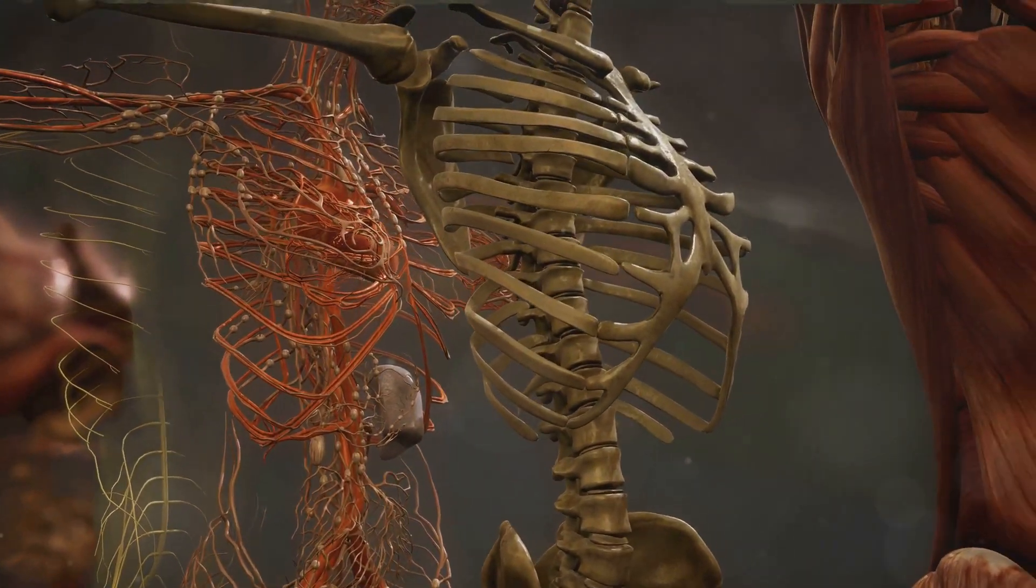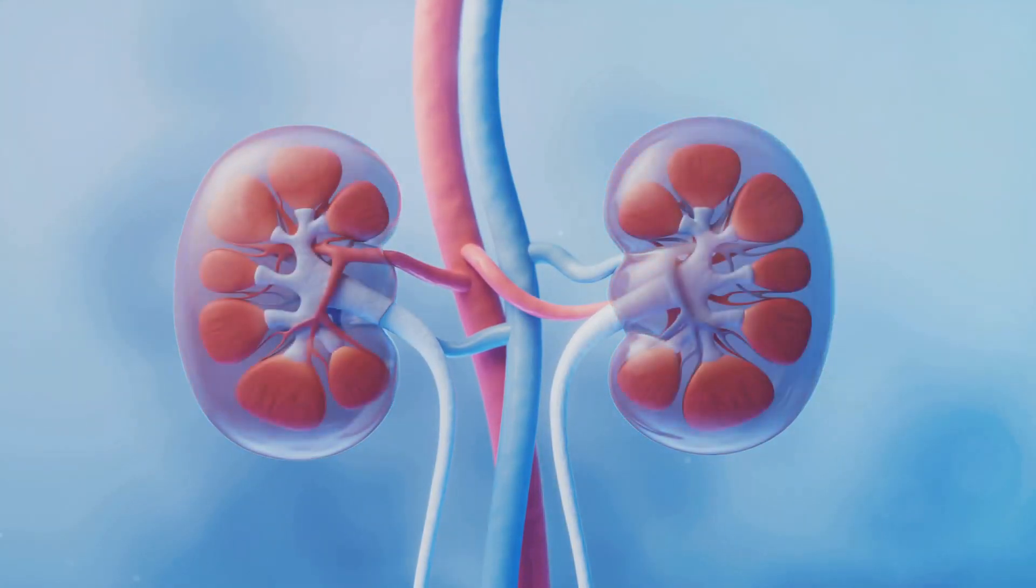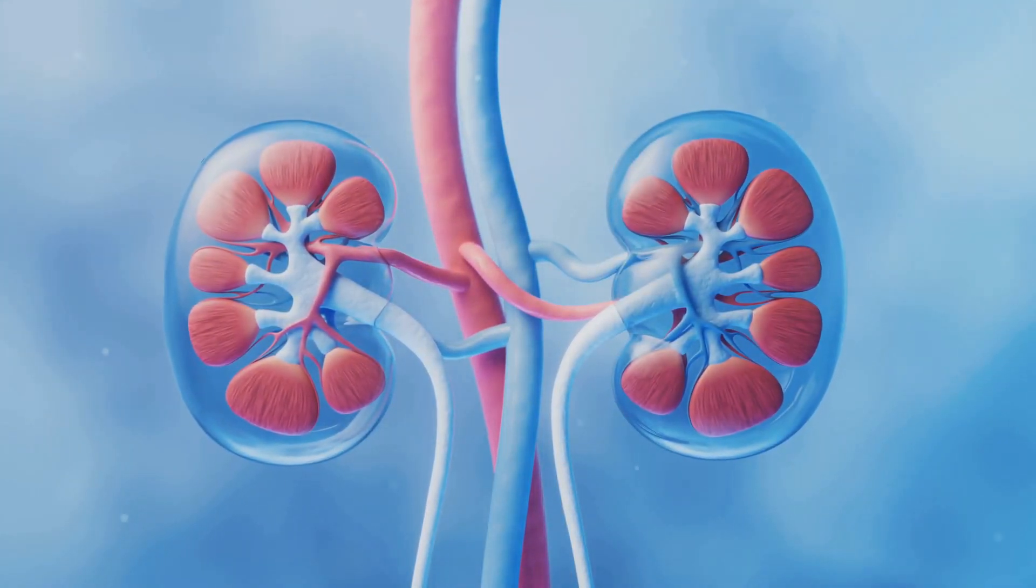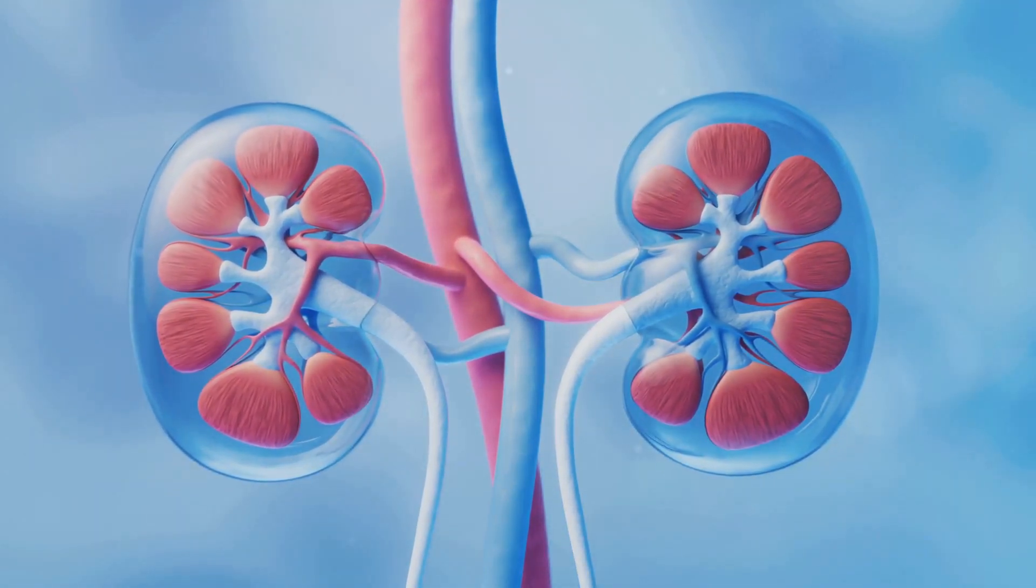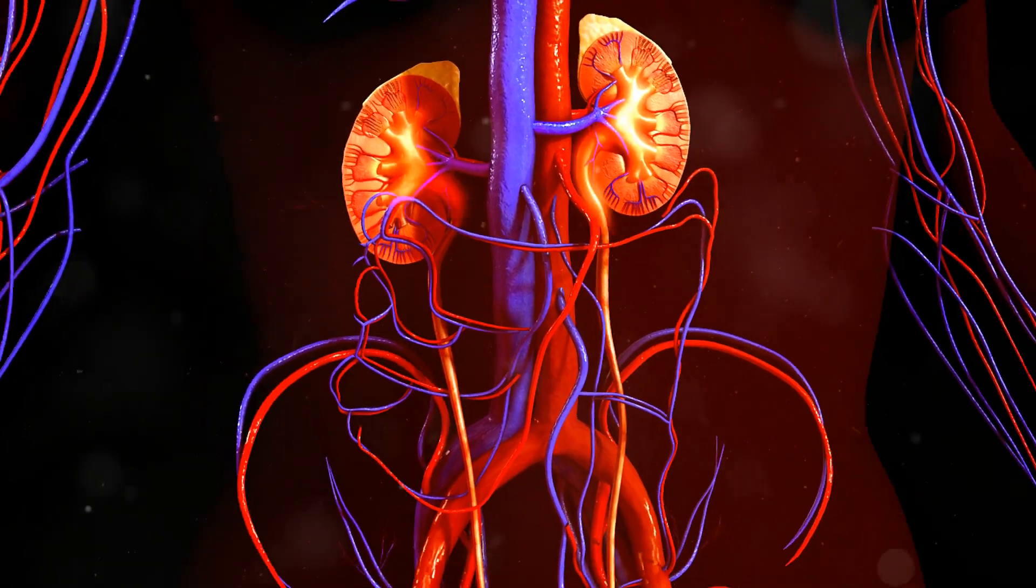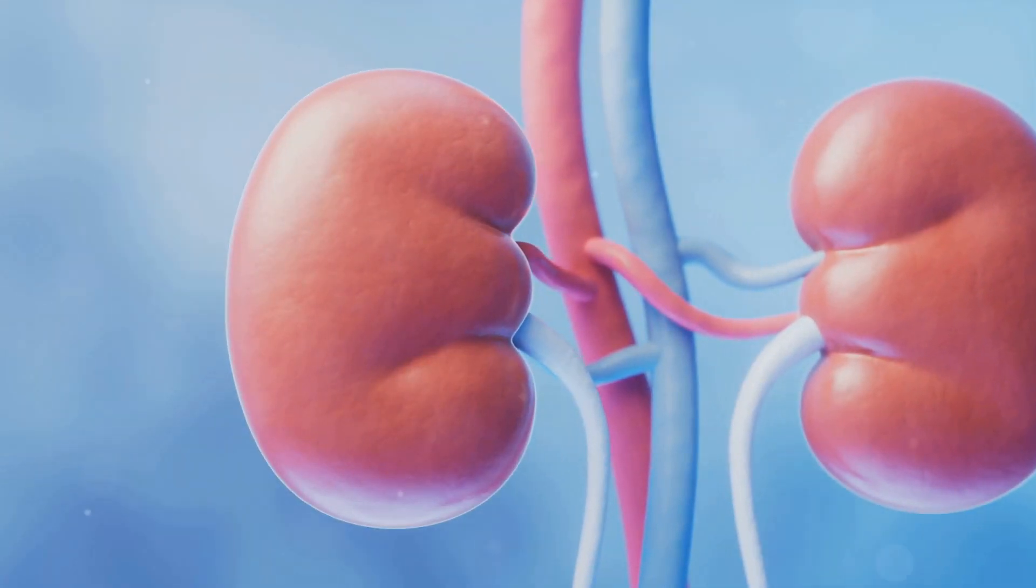On to the urinary system. Because what goes in must eventually come out. This system is responsible for filtering blood, removing waste, and balancing fluids and electrolytes in the body. The kidneys are the stars of the show,